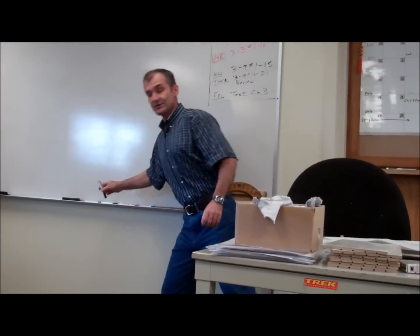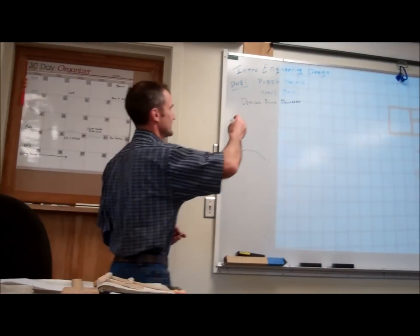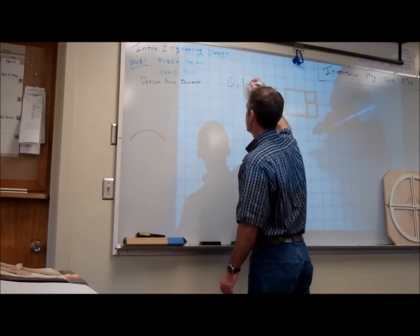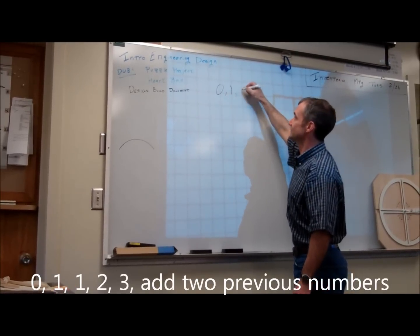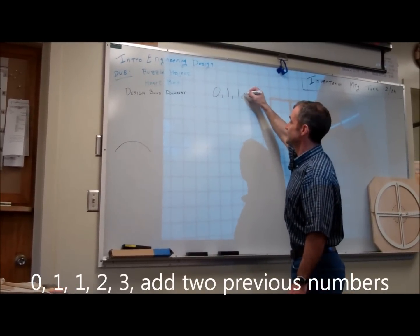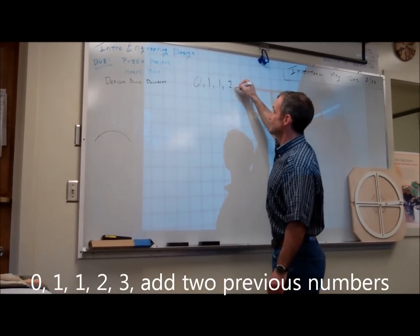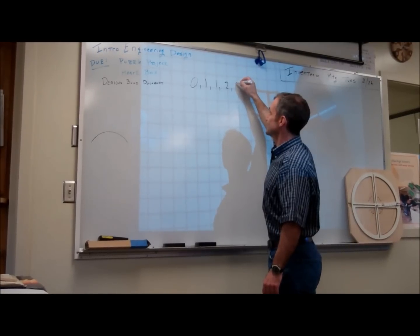If you start with the first number, zero, one, then you add the two previous numbers together. So zero plus one is one. Clay, one and one is? Two. Rich, two and one is? Three.